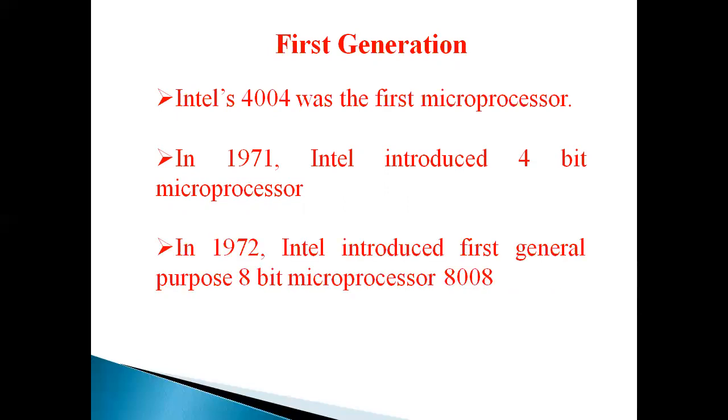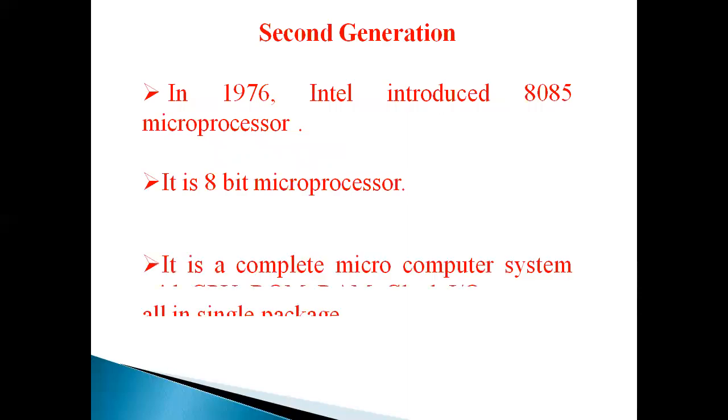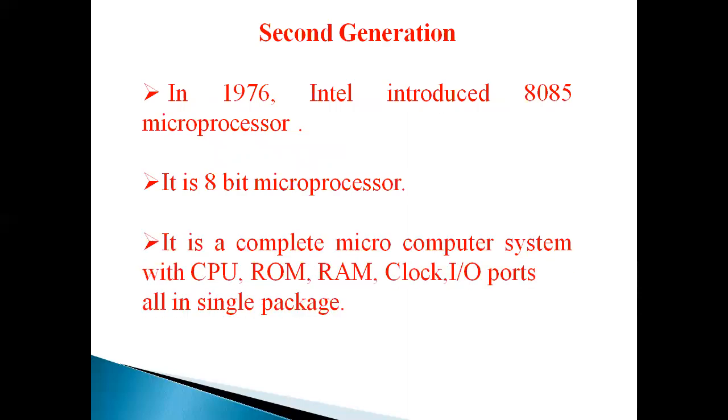Second generation: In 1973, Intel introduced 8080 microprocessor. It is a 8-bit microprocessor. In 1977, Intel introduced 8085 microprocessor. It is a 8-bit microprocessor. It is a complete microcomputer system with CPU, ROM, RAM, clock, I/O ports, all in a single package.